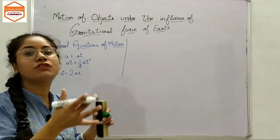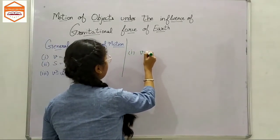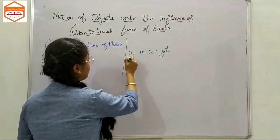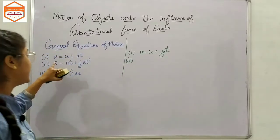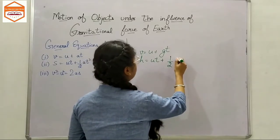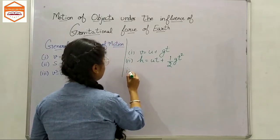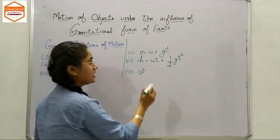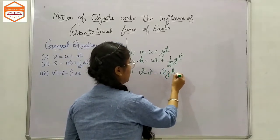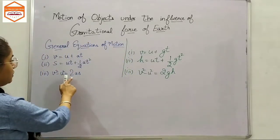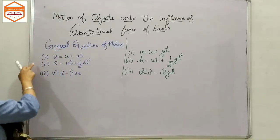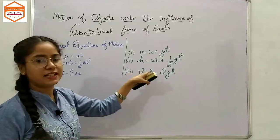Our new equations of motion under the influence of gravitation are: first, V = U + GT; second, H = UT + ½GT²; and third, V² = U² + 2GH. We simply replace S with H and A with G. It is as simple as that, but there are also some new rules to follow.